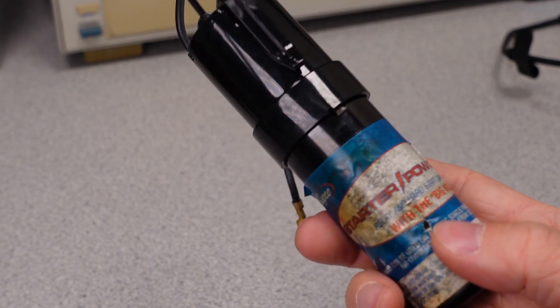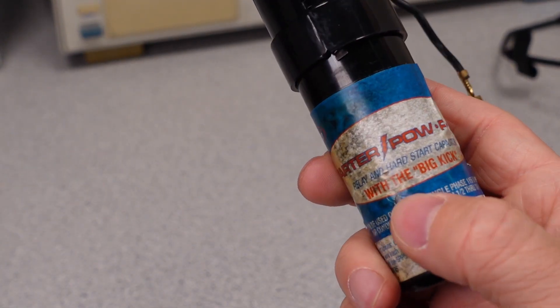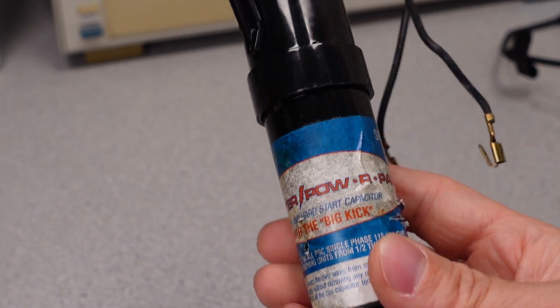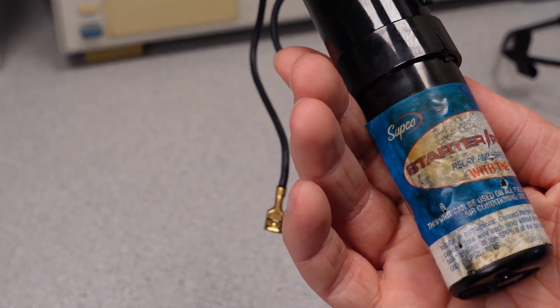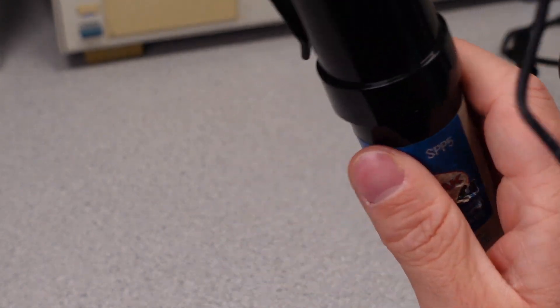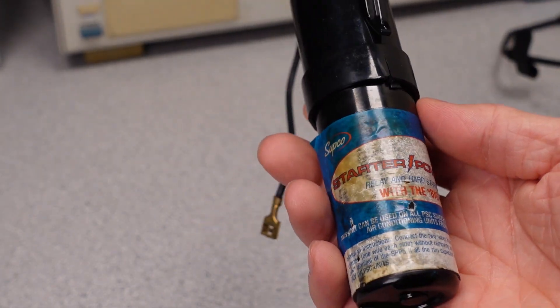So this is designed, as it says right on the front, relay and hard start capacitor with the big kick. And what they mean by that is this thing basically bumps the unit to get the motor, the compressor motor to start spinning. So without this piece, the compressor will never spin.